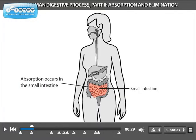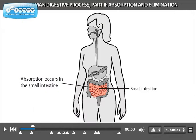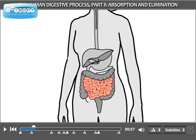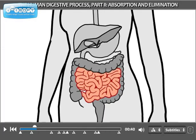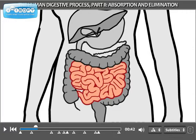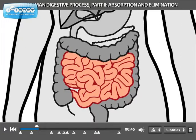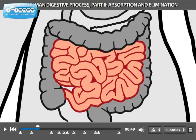Absorption occurs mainly in the small intestine. The secret to effective absorption is simple: surface area. The greater the cell surface area that can come into contact with chyme, the greater the amount of nutrients that can be absorbed. There are four primary ways the small intestine achieves this.